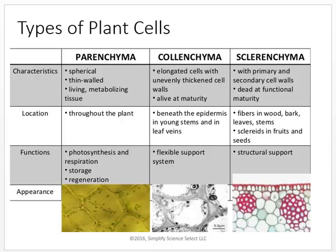Parenchyma cells are spherical, thin-walled, living metabolizing tissue — probably the most common cell type, found throughout the plant during photosynthesis, respiration, and other normal functions. Collenchyma cells are alive at maturity, elongated, found beneath the epidermis, and serve as a flexible support system. Sclerenchyma cells have primary and secondary cell walls and are actually dead at functional maturity because they form very strong fibers like those in wood, bark, leaves, and stems — they provide structural support.